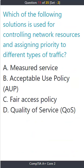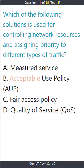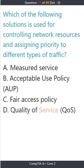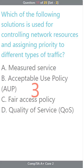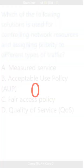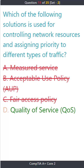Question 11. Which of the following solutions is used for controlling network resources and assigning priority to different types of traffic? A) measured service, B) acceptable use policy (AUP), C) fair access policy, D) quality of service (QoS). The correct answer is D) quality of service (QoS).